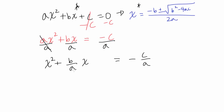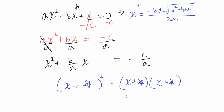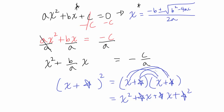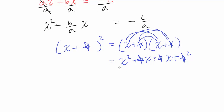What we want to do is change the left side of this equation to the form x plus something squared. Let's call that something a star. To understand why, let's expand x plus star squared: that's x times x, which gives x squared, plus x times star, plus star times x, plus star times star. So x plus star squared equals x squared plus 2 star x plus star squared.